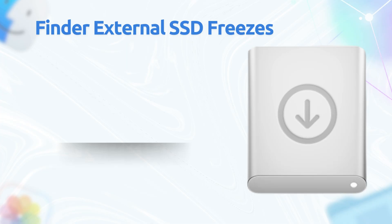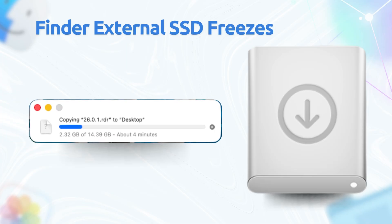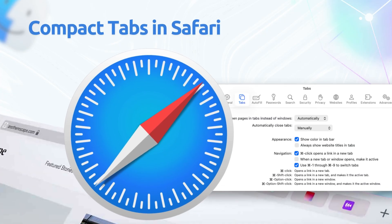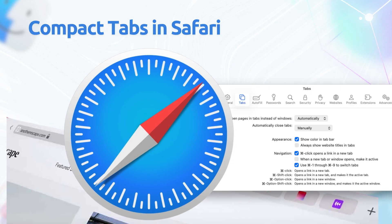In terms of Finder and external drives, copying files or ejecting external SSDs used to freeze Finder for up to 30 seconds. Now these tasks are faster and more consistent. Moving on with Safari tabs — the Compact Tabs option, missing in Tahoe 26.0, is partially back. Tabs now auto-compact better in windowed mode, saving space.